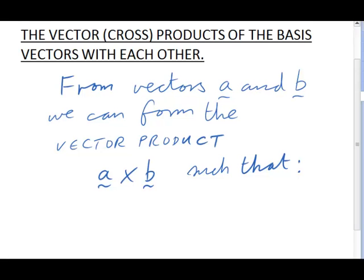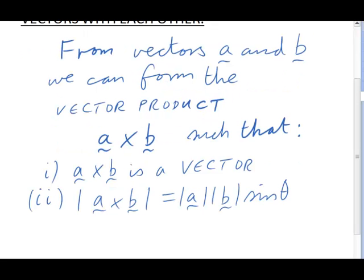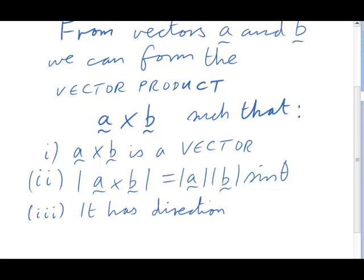The vector product between two vectors a cross b is a vector such that its magnitude is just the product of the magnitudes of a and b with the sine of the angle between a and b.